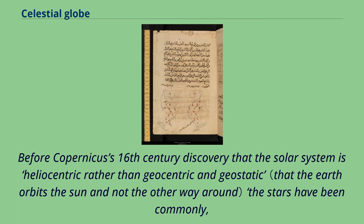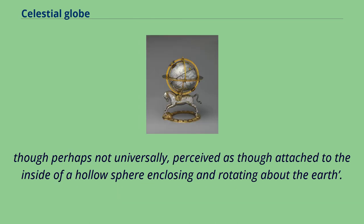Before Copernicus's 16th-century discovery that the solar system is heliocentric rather than geocentric and geostatic, the stars had been commonly, though perhaps not universally, perceived as though attached to the inside of a hollow sphere enclosing and rotating about the Earth.